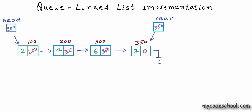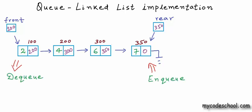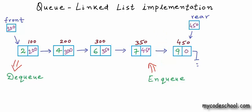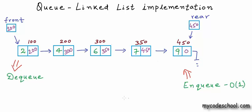We can call this variable rear, and rename the head pointer to front. In any insertion or removal, we will update both front and rear. Now when we enqueue — say a node at address 450 — we use the rear pointer to directly update the address field of the current rear node, build the link, and then update rear to point to the new node. With this design, both enqueue and dequeue operations are O(1) — their time complexity will be O(1).